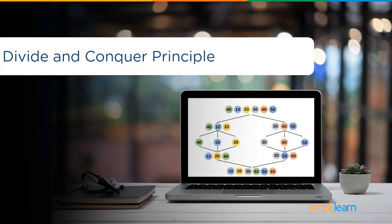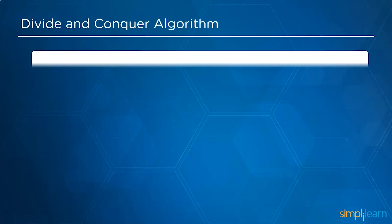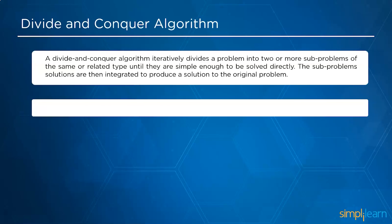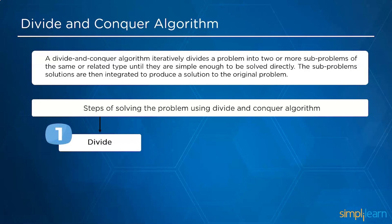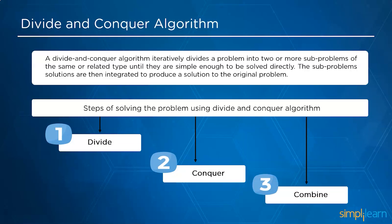So what exactly is the divide and conquer algorithm? A divide and conquer algorithm iteratively divides a problem into two or more subproblems of the same or relative type until they are simple enough to be solved directly. The subproblem solutions are then integrated to solve the original problem. There are three steps: divide, conquer, and combine.